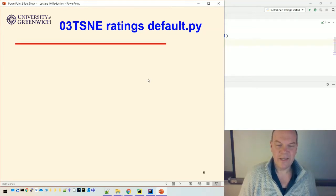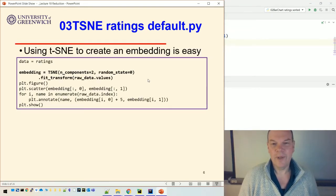Okay, so let's get to grips with t-SNE then. We can use t-SNE to create an embedding. It's very easy to do that. You just have this, this calls a t-SNE object, which we fit to that data, and that creates an embedding.